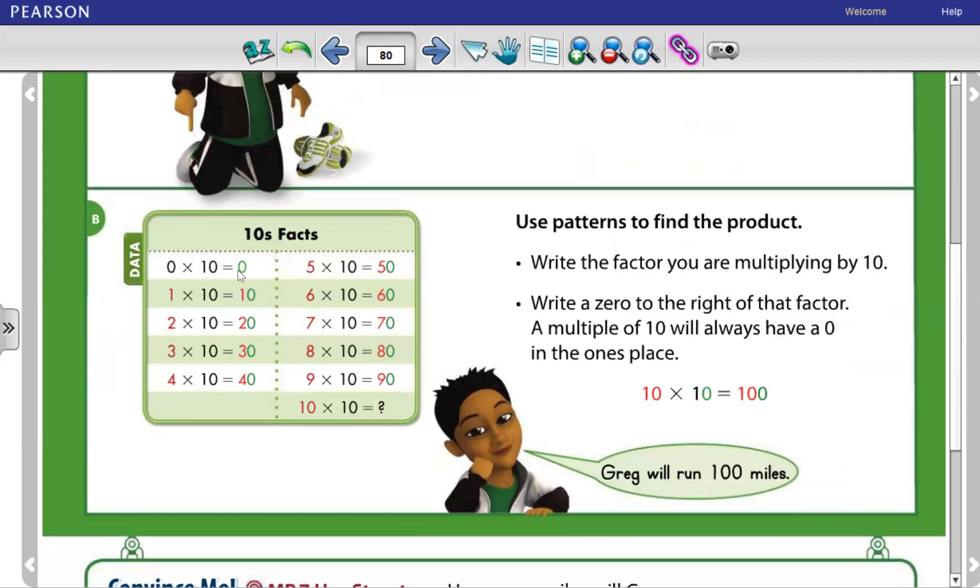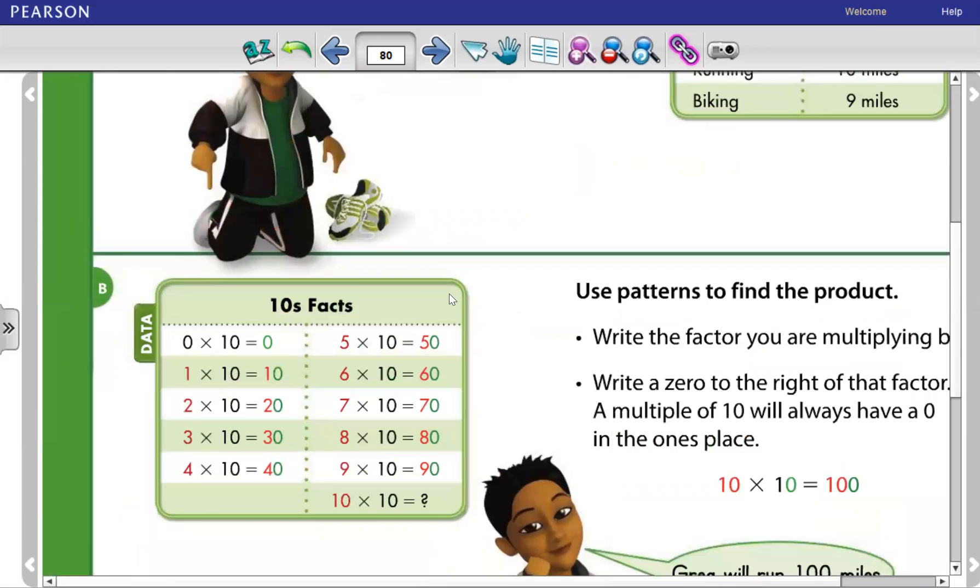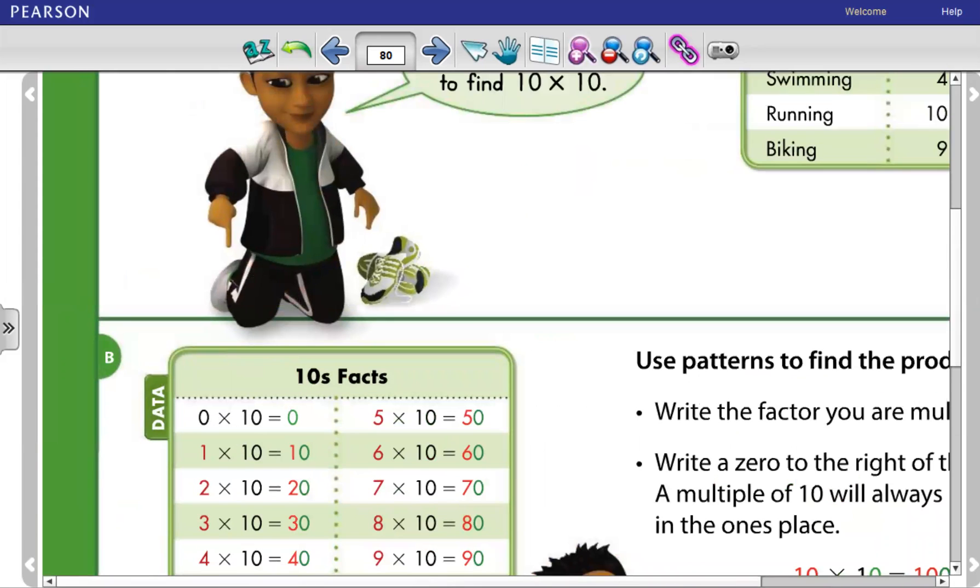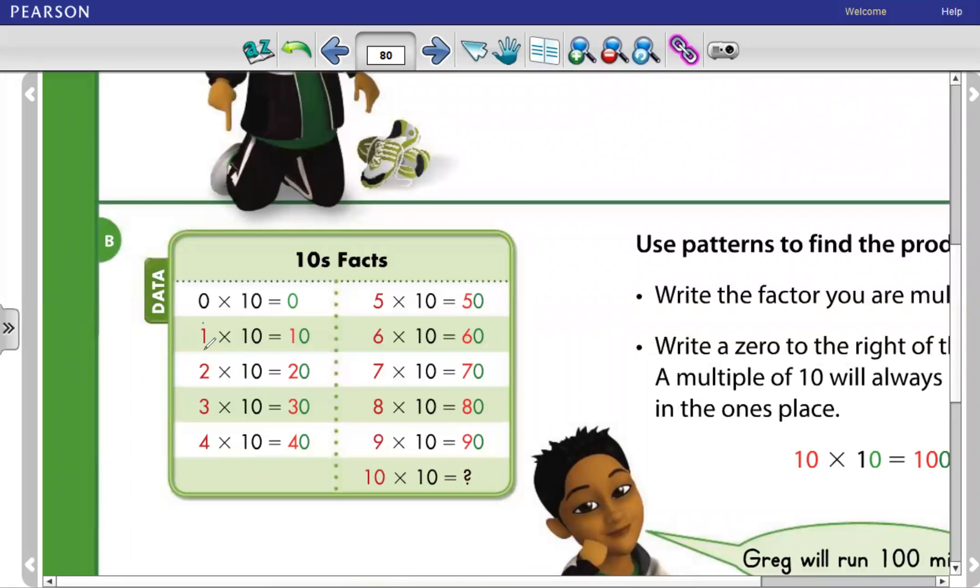So 0 times 10 equals 0. As we said, the property of 0, any number we multiplied by 0 equals 0. Then 1 times 10. I will multiply the 1 times 1 equals 1. Then I add the 0 of the 10. It becomes 10.